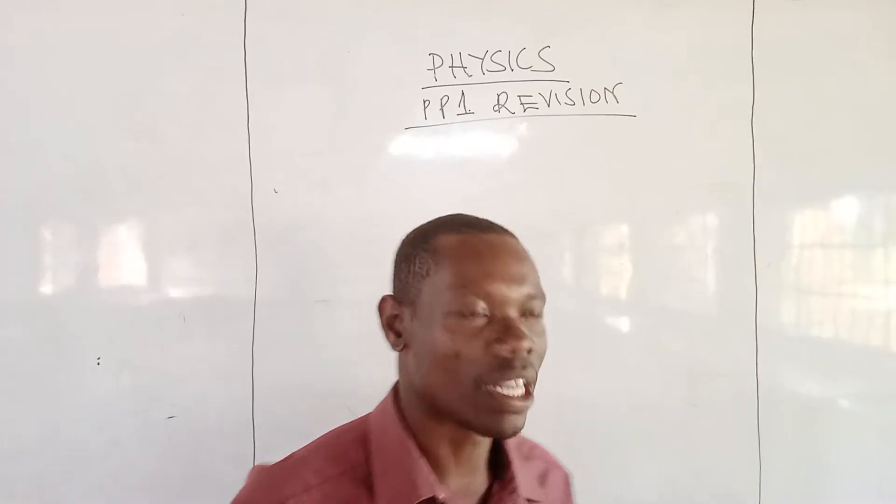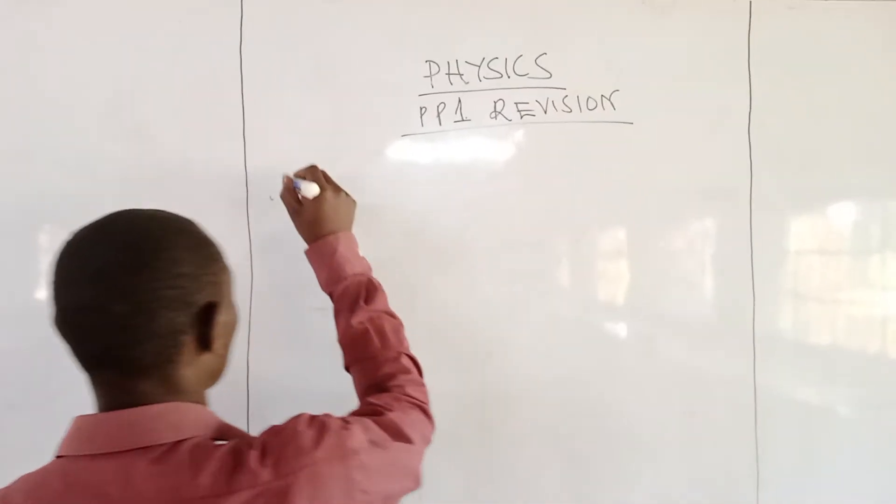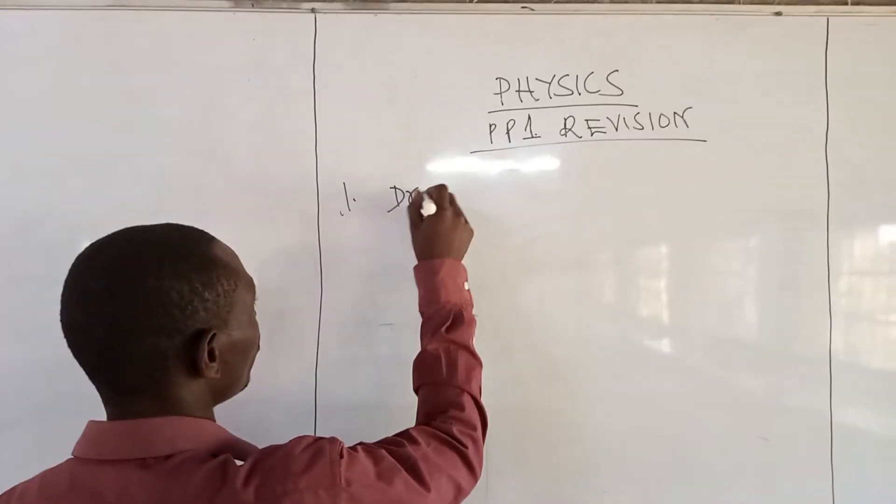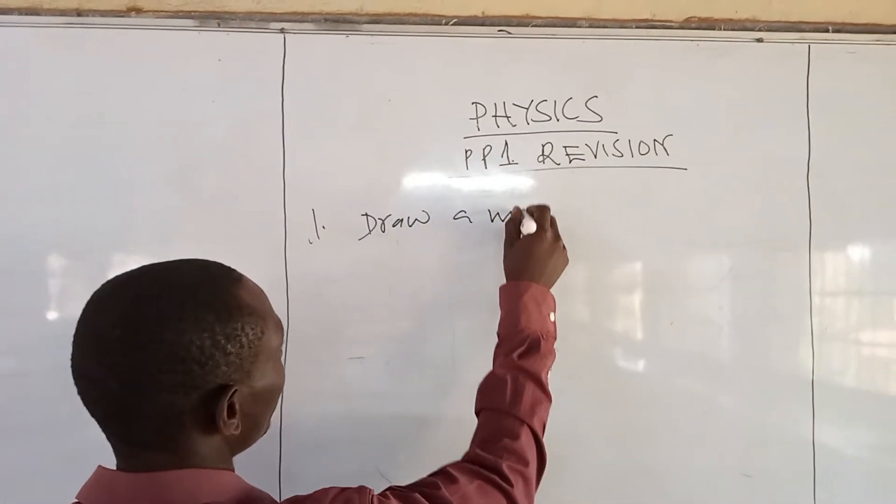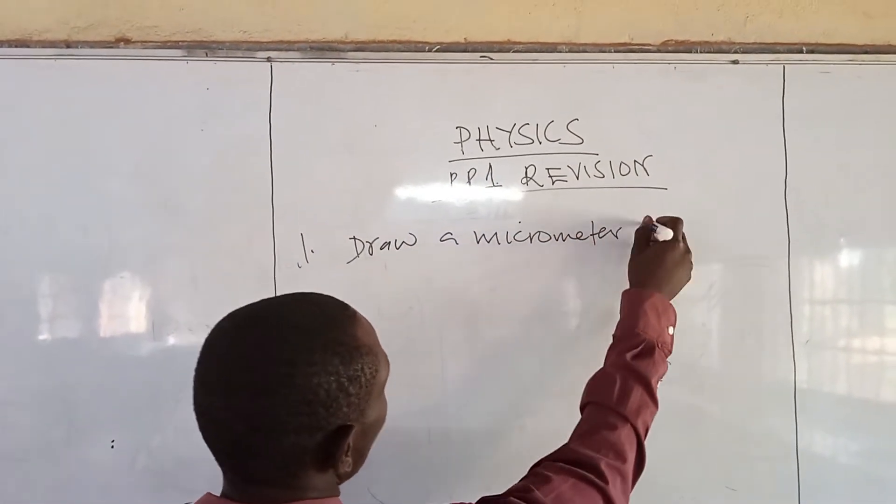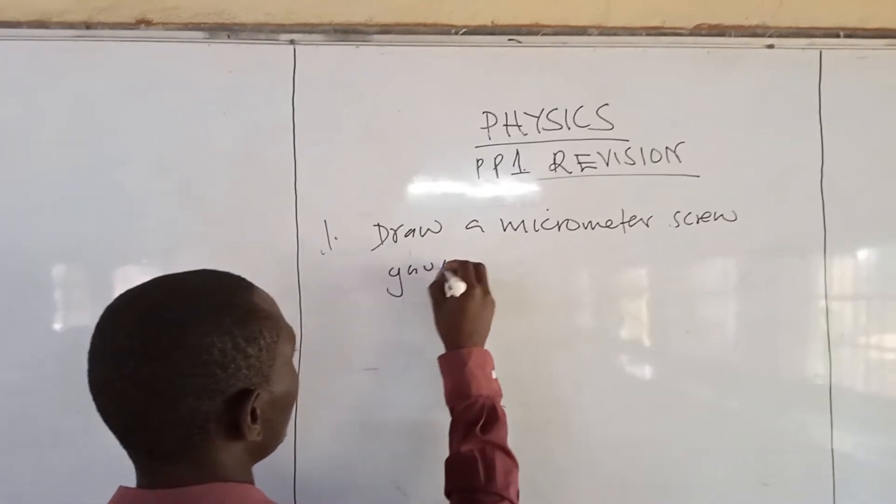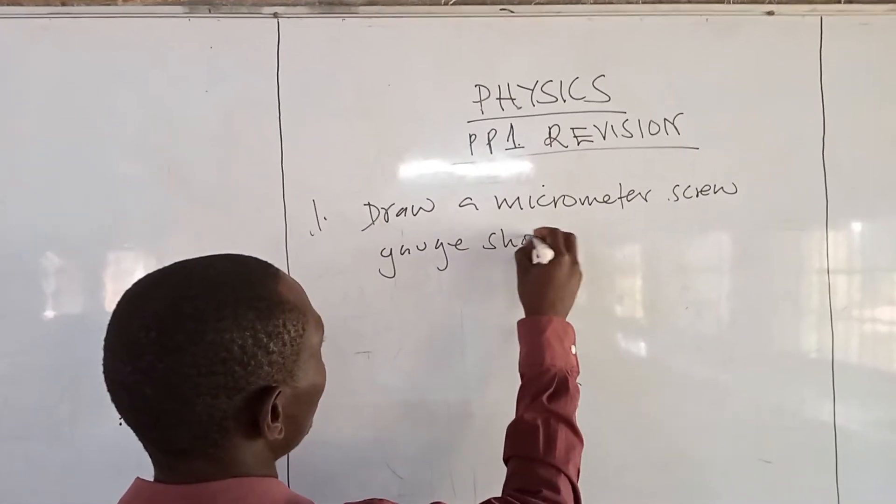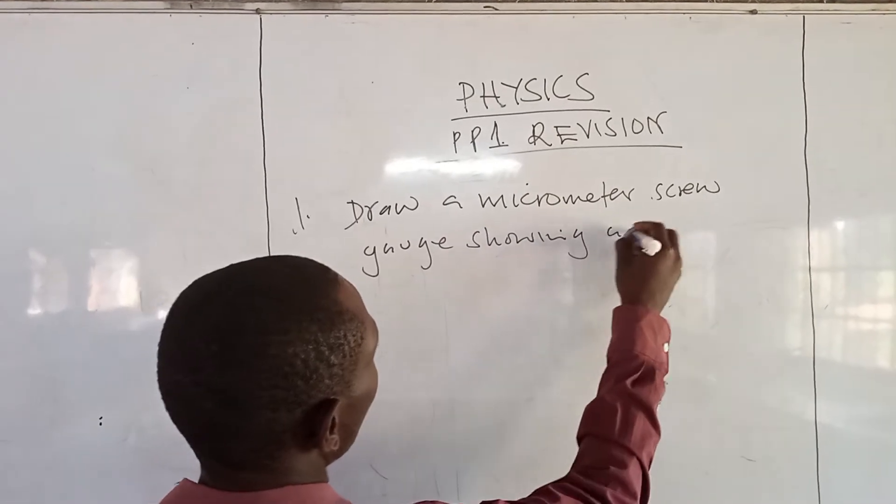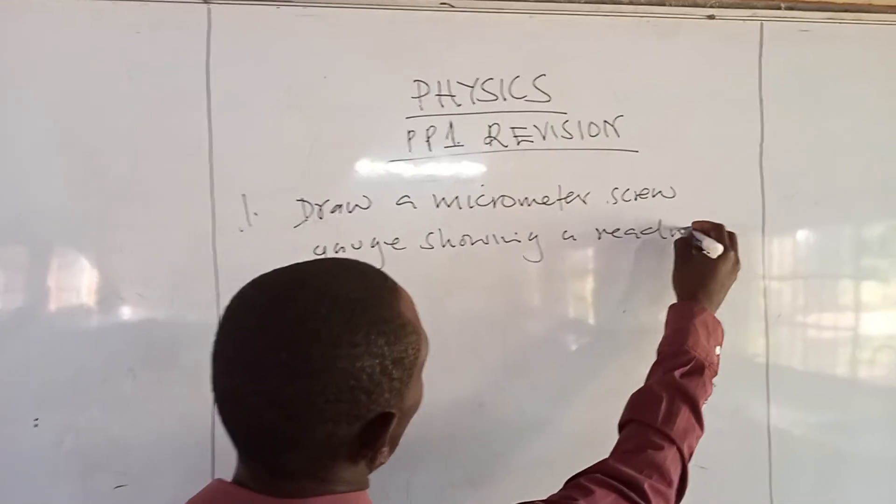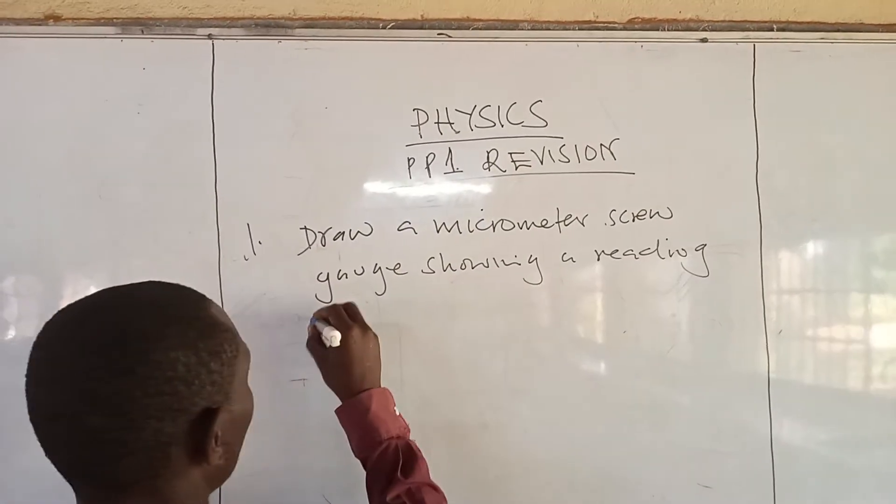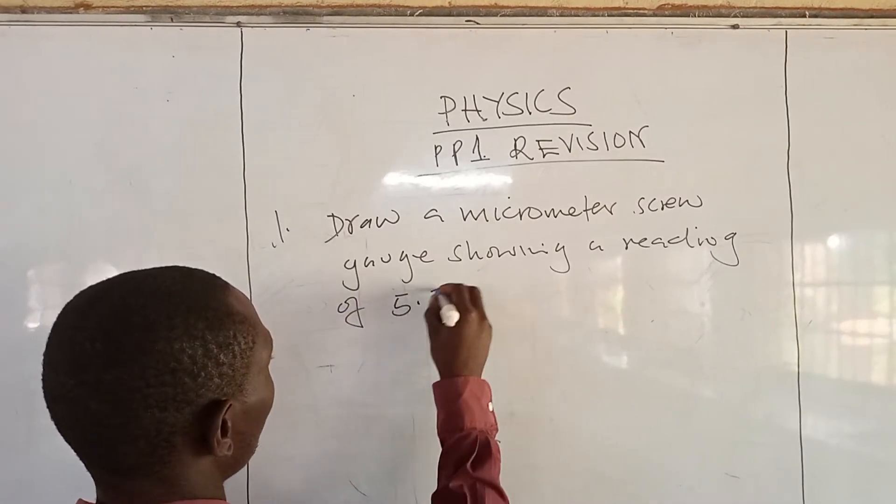The question is asking: draw a micrometer screw gauge showing a reading of 5.56 millimeters.